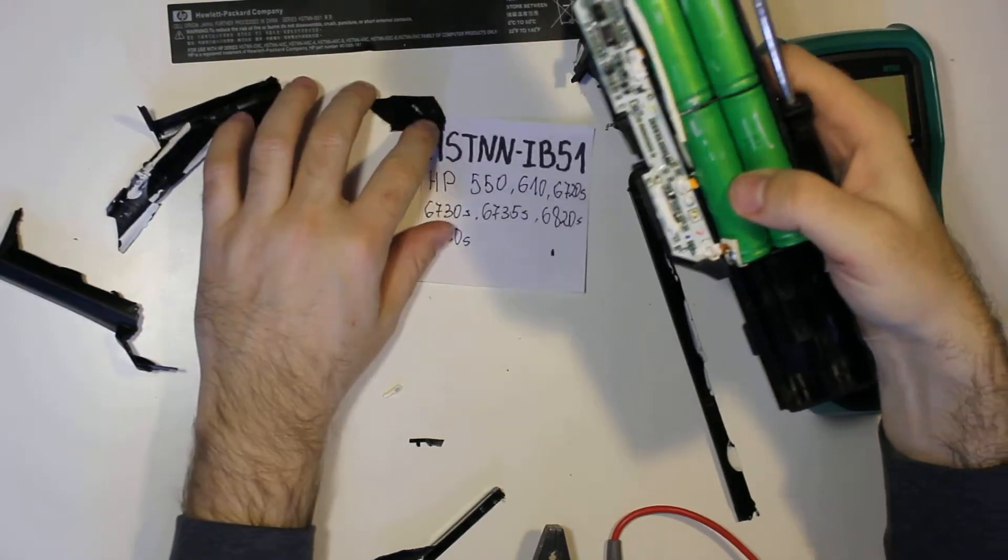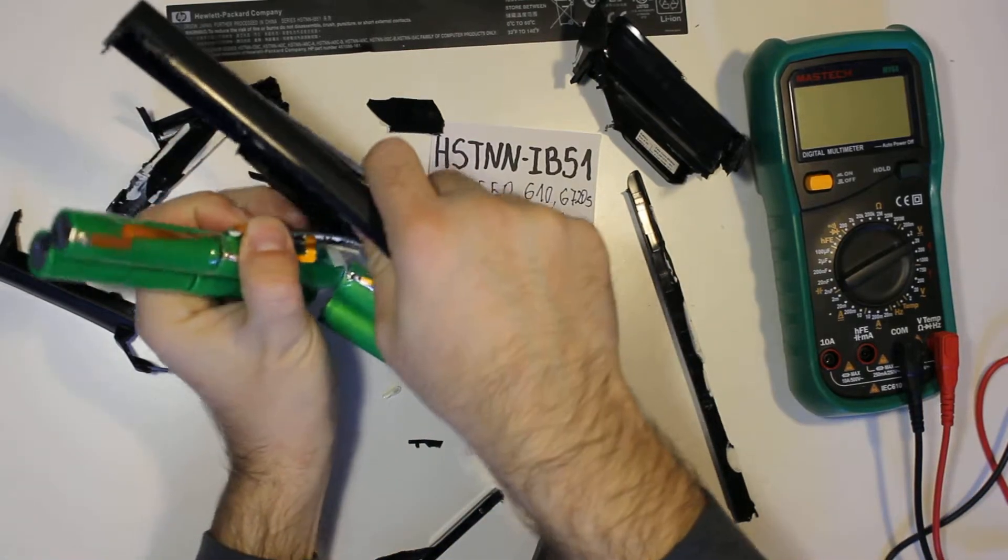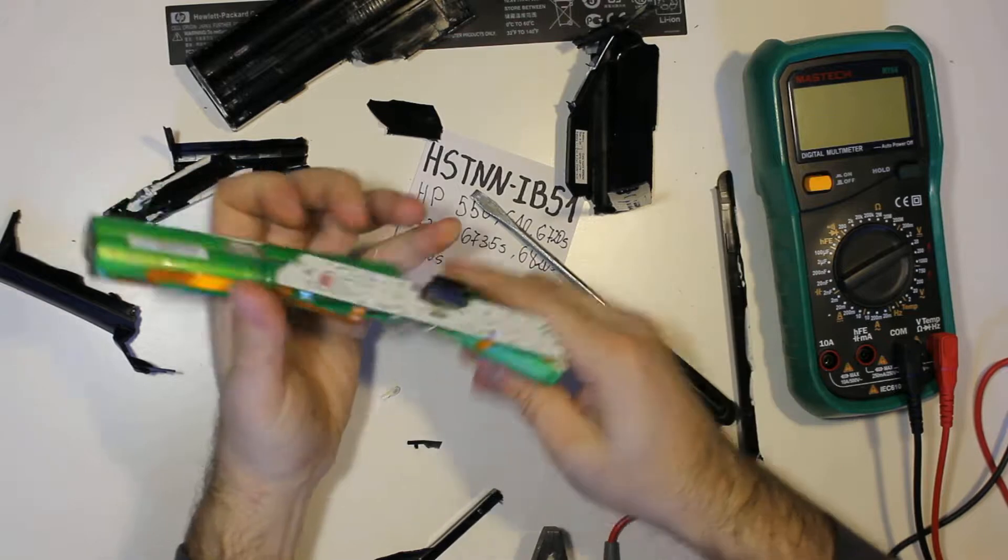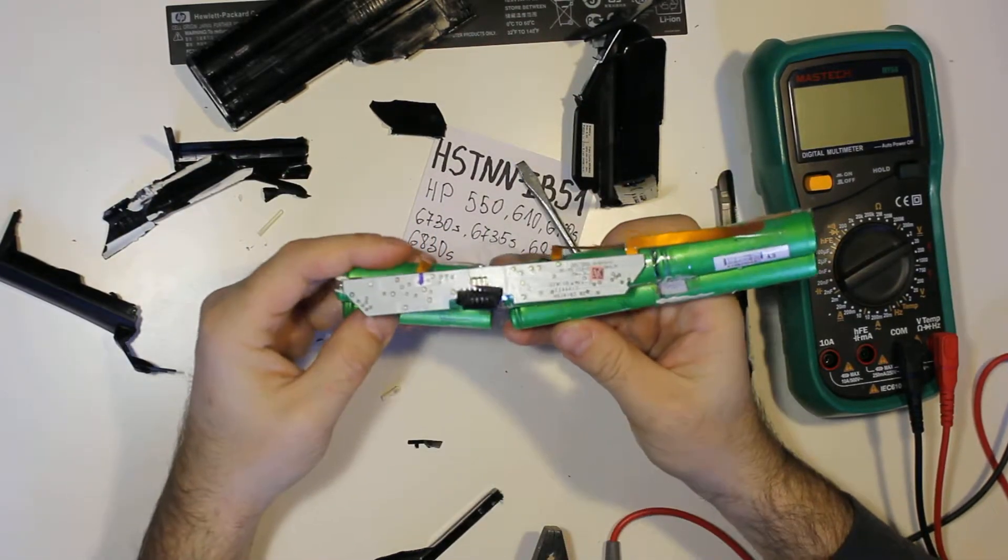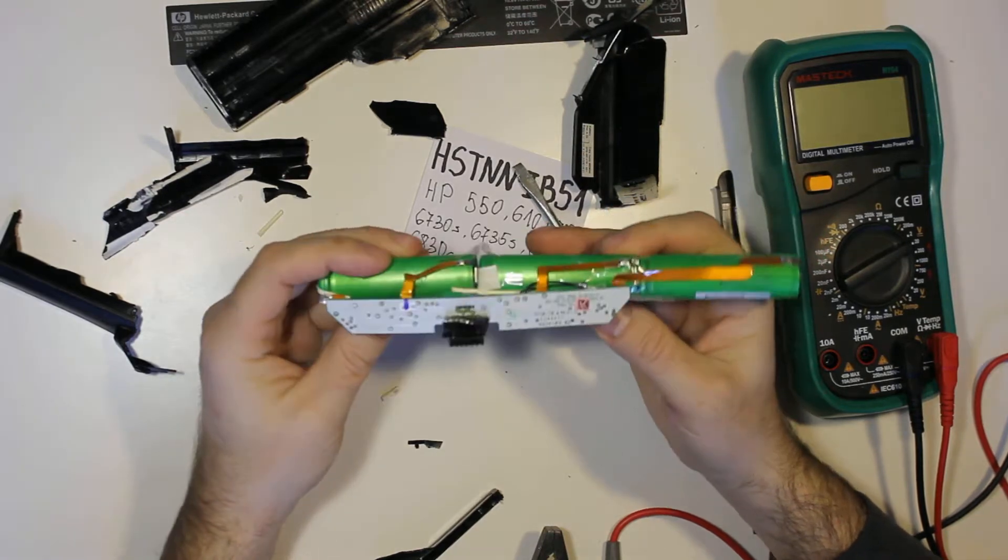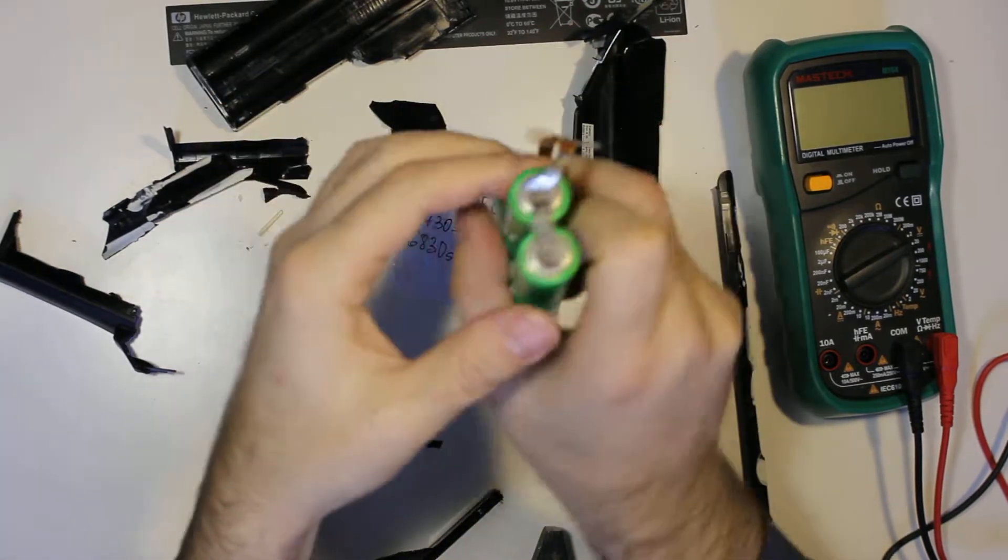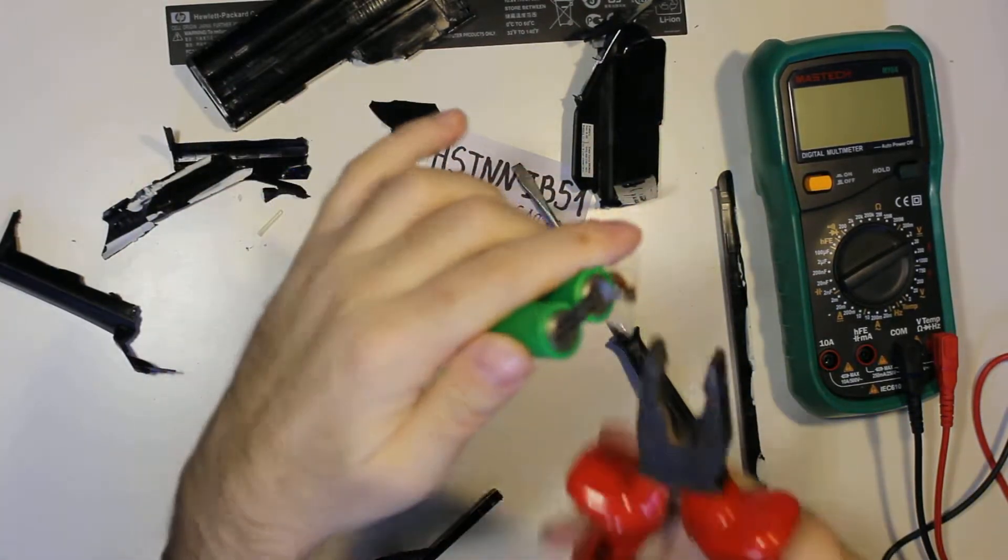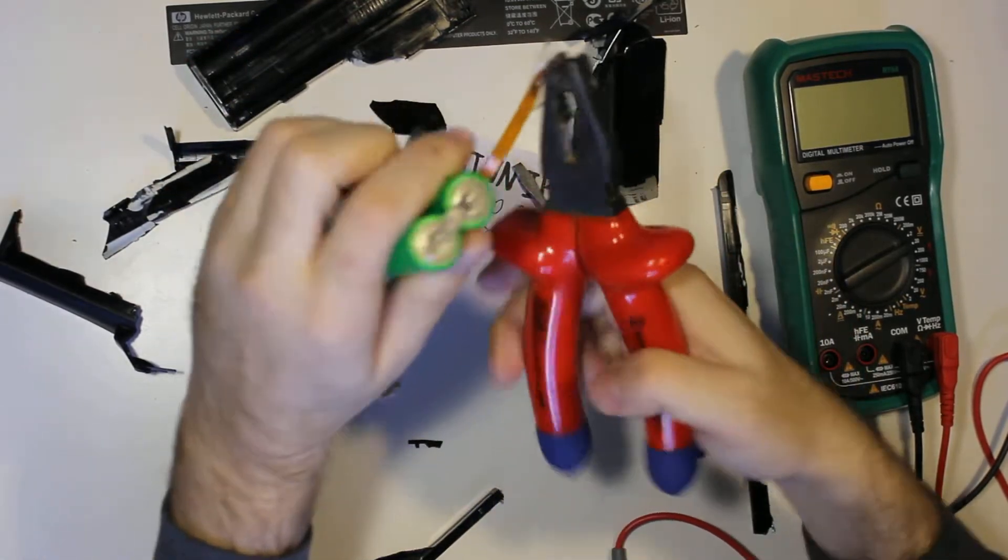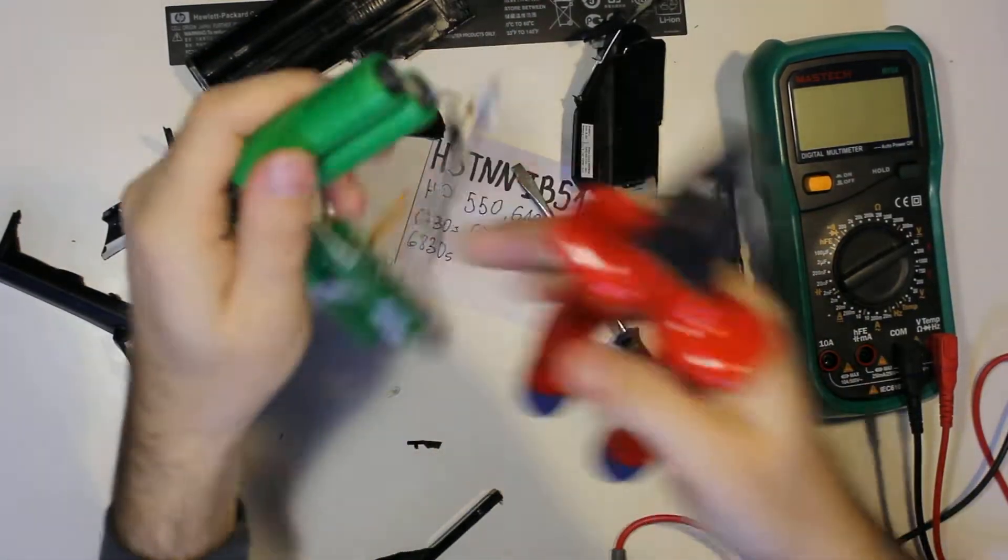Okay, so here are the 6 cells and the PCB. They are G5 cells, so not big capacity, just I guess about 2000 milliamp hours.